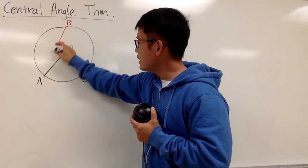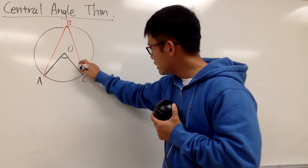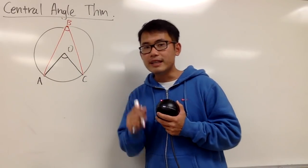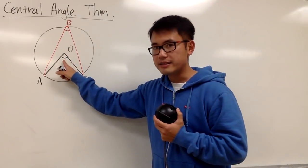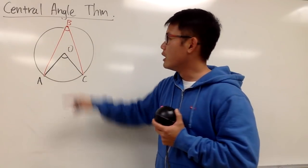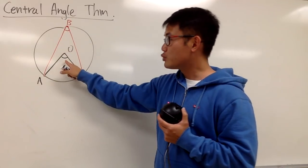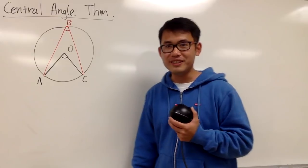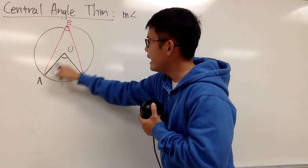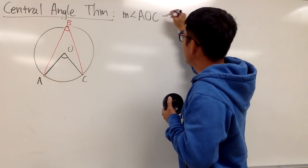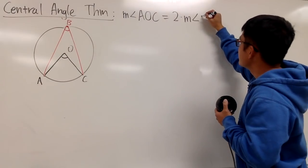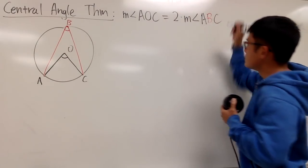We connect B to A and then B to C. What the Central Angle Theorem says is that the angle at the center has to be twice as big as the inscribed angle at B. So for example, if this angle is 20 degrees, then the central angle has to be 2 times 20, which is 40 degrees. The theorem states: measure of angle AOC equals 2 times the measure of angle ABC.